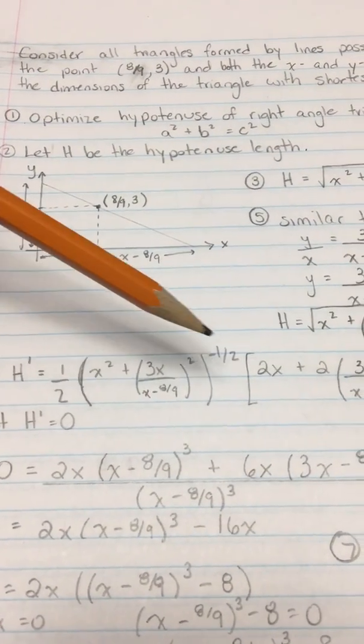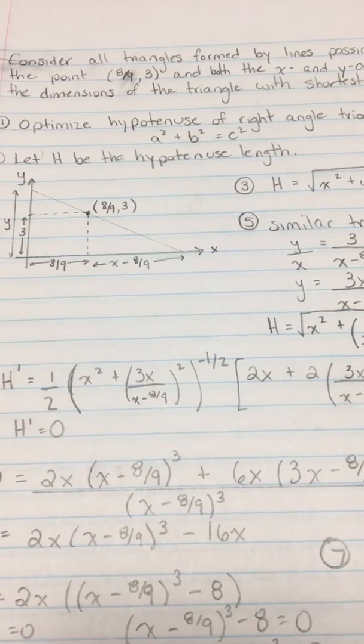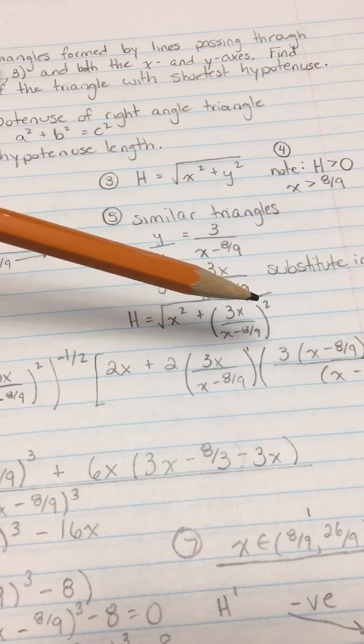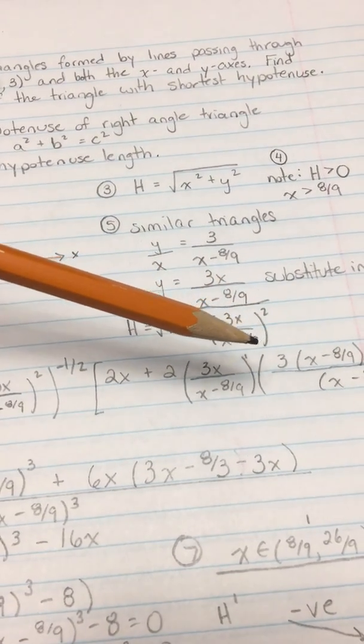The derivative of the outside is here and then we're going to take the derivative of the x² and then the derivative of 3x/(x - 8/9)².